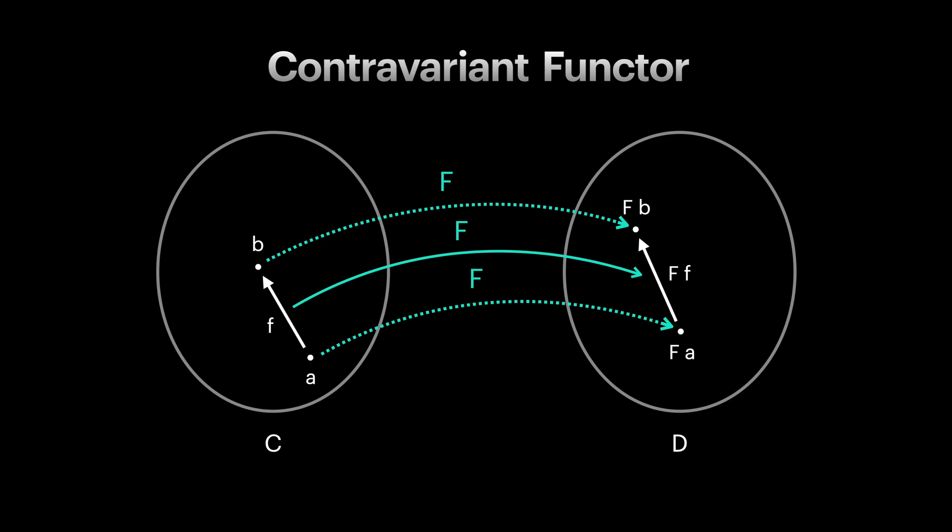Contravariant functor is also a mapping between two categories, but it is defined from the opposite category in which functions have opposite direction. And this is how the mapping between two categories are defined for contravariants.